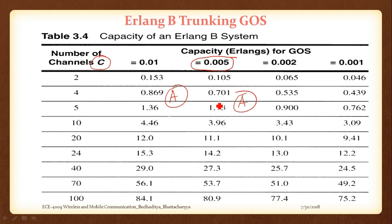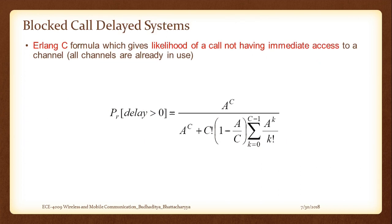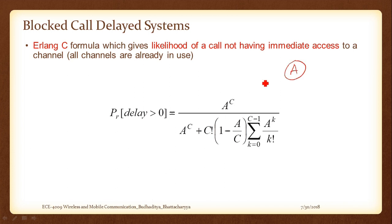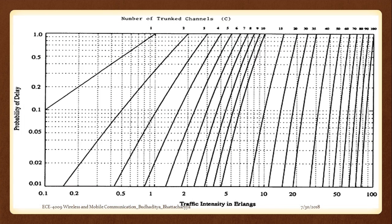Erlang C is similar in structure to Erlang B: parameters A, C, and delay probability D. We will have a similar tabulation for Erlang C. Using these, we can find what delay a user experiences given a certain number of channels and traffic intensity. We will solve a few problems on Erlang B and C next class to make this clear.